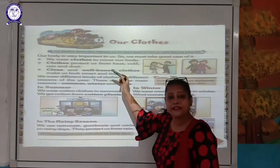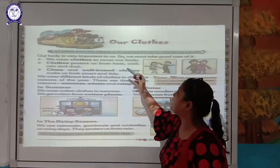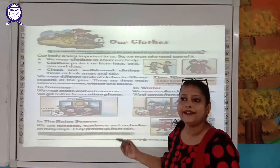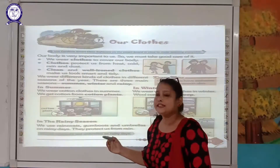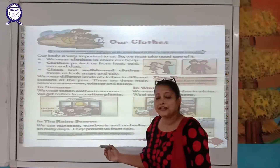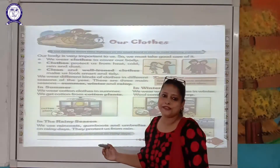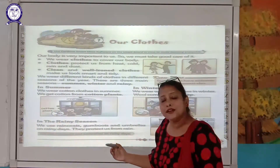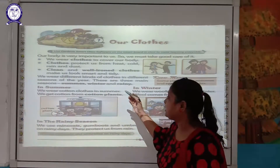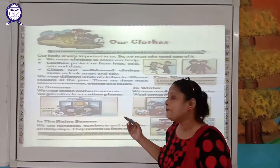Clothes are a basic need. We wear clothes to cover our body and to protect us from heat, cold, rain, dust, germs and insects. They also make us look smart and attractive. We can identify the occupation of a person by their clothes. We wear different kinds of clothes according to age, season and occupation.